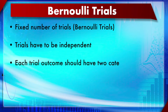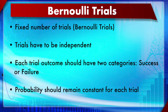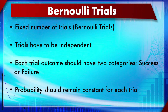For Bernoulli trials: the fixed number of trials needs to be done - the number of trials should be fixed. Trials should also be independent, so there should be no relation between the first trial and the second trial. Each trial outcome should have exactly two possible results, like head and tail, male and female, case and control, or living versus dead. These are known as Bernoulli trials - generally referred to as successes and failures.